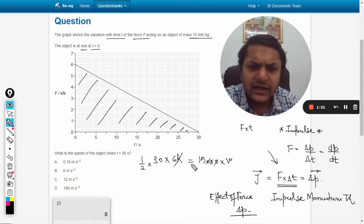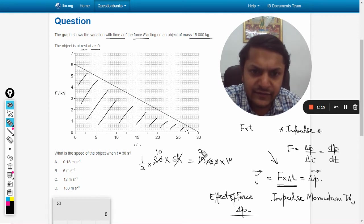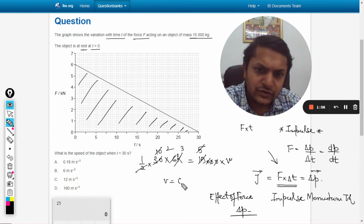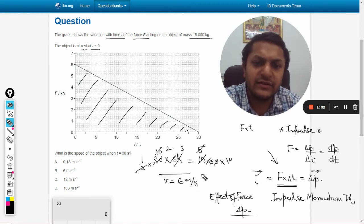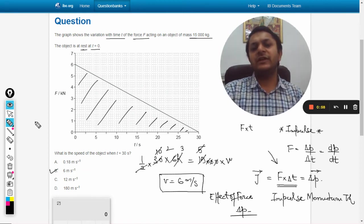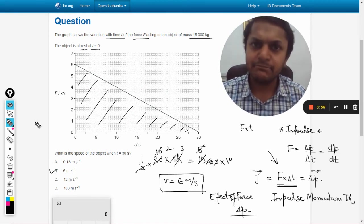Let us see - three tens, three fives are fifteen. So velocity is 6 meters per second.